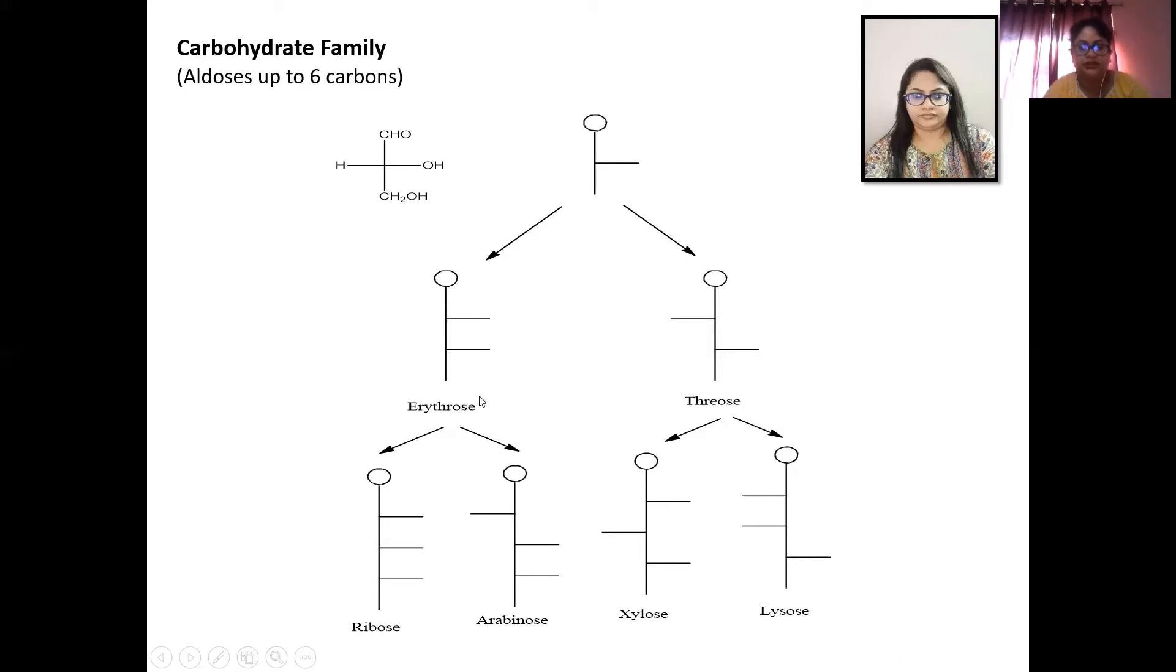it is called erythrose, and if it is on the left hand side it is called threose. Then again we are adding one chiral carbon to erythrose. So we will get ribose or arabinose. Here in ribose OH is on the right hand side and in arabinose OH is on the left hand side. And similarly from threose we are getting xylose and lyxose.